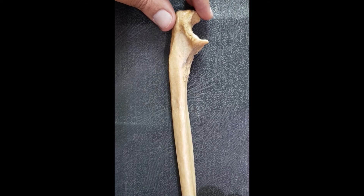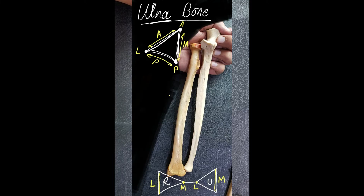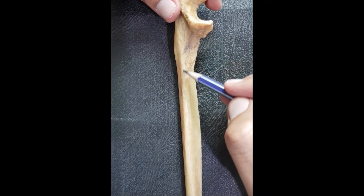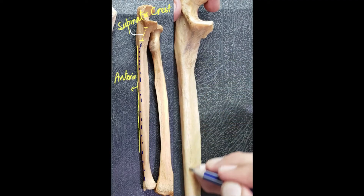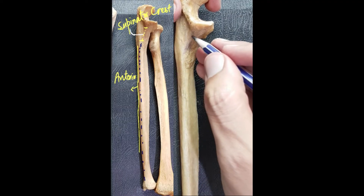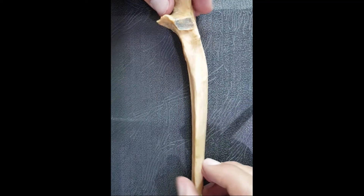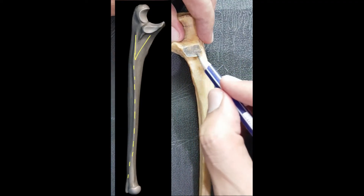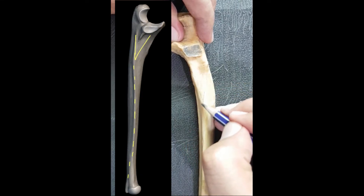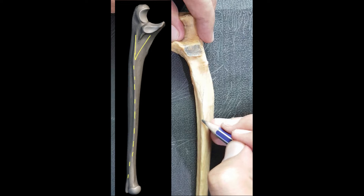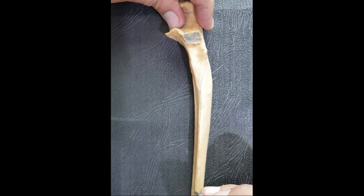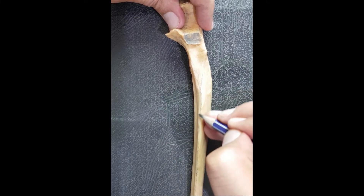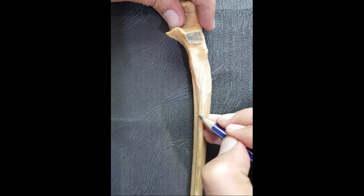The shaft of the ulna bone is triangular in cross-section. It has got three borders and three surfaces. The borders are the lateral, anterior, and posterior borders. The surfaces are the medial, anterior, and posterior. We will trace the anterior border from the supinator crest downward. The lateral border — the interosseous border giving attachment to the interosseous membrane towards the radius — is traced from beneath the radial notch, after the triangle, from its apex downward.